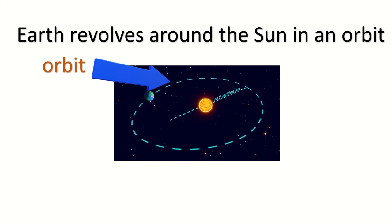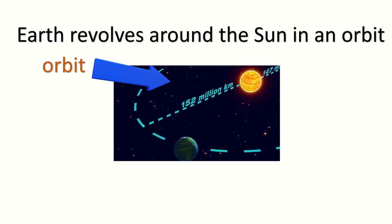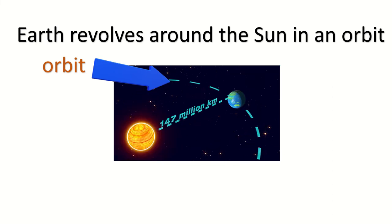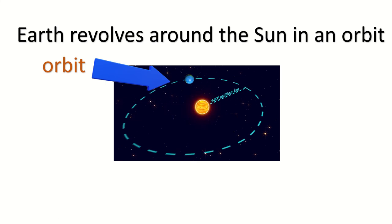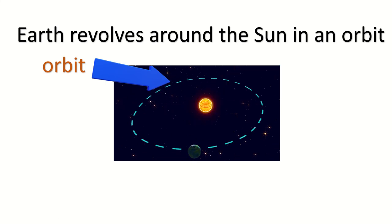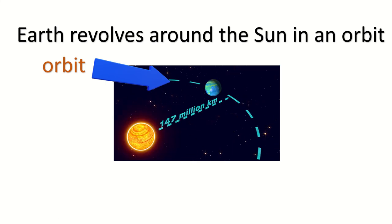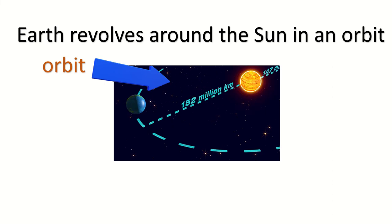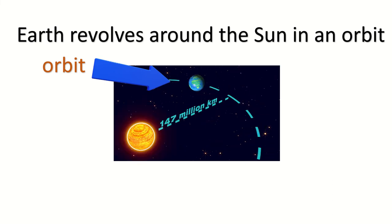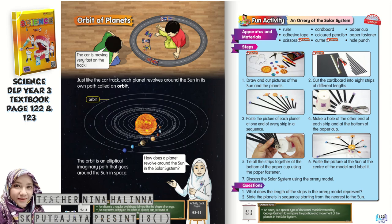As you can see from the numbers here, the shortest distance between Earth and the sun is 147 million kilometers, compared to the longest distance of 152 million kilometers. So the orbit is not really round — it is elliptical.